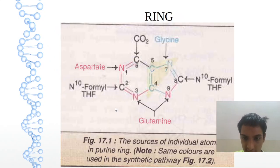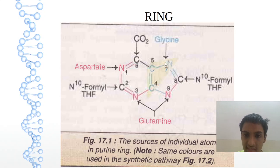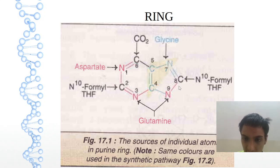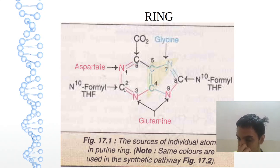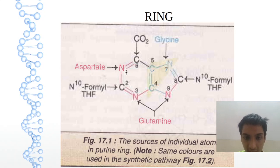We will see the ring first. In this ring, C4, C5, N7 is glycine, shaded in the yellow triangle. C8 and N10 is formyl THF. N3 and N9 is glutamine, and N1 is aspartate.